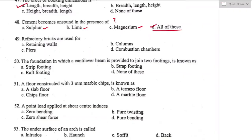Question number forty-nine: refractory bricks are used for — they are made from fire clay, are yellowish or light brown colored, and have high melting points, acting as heat-resisting barriers between high and low temperature zones. The primary purpose is to resist high temperatures in combustion chambers. Option D is the right answer.